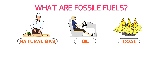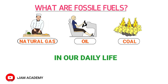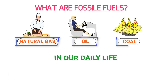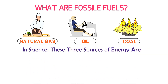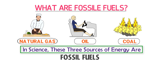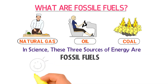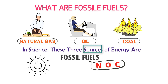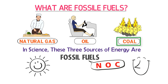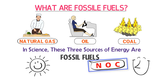In our daily life, the main sources of energy are natural gas, oil, and coal. In science, these three sources of energy are commonly known as fossil fuels. My personal mnemonic for fossil fuels is NOC — N stands for natural gas, O stands for oil, and C stands for coal. Whenever you see or read 'fossil fuels', think that it is NOC: natural gas, oil, and coal.